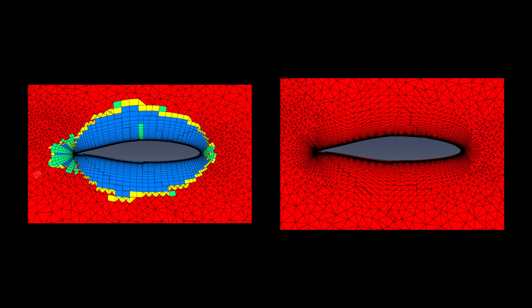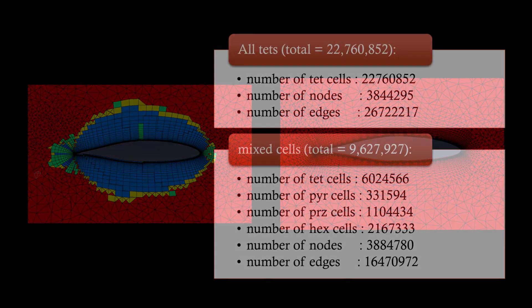The other mesh used was all tris on the surface and tetrahedra, or tets, for the volume. Both meshes were created from the same diagonalized surface mesh.